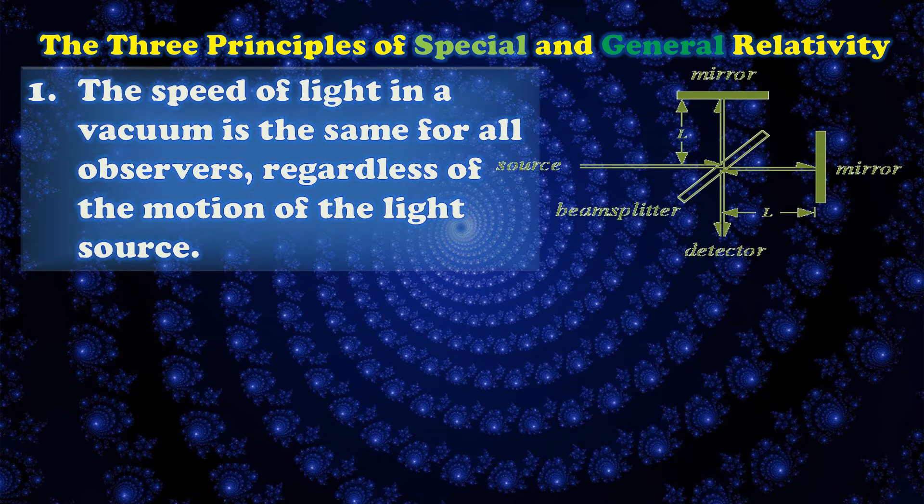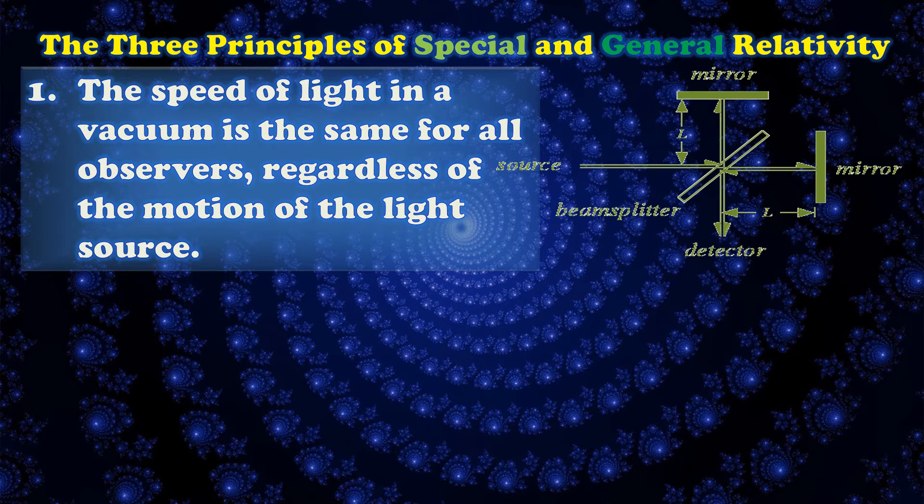The famous Michelson-Morley experiment in 1887 proved that light travels with the same speed regardless whether it was moving in the direction of the movement of the earth or perpendicular to it. This unexpected result led to the first principle of special relativity that the speed of light in vacuum is the maximum speed which anything in the universe can ever attain regardless of the motion of the source or the reference frame of the observer.